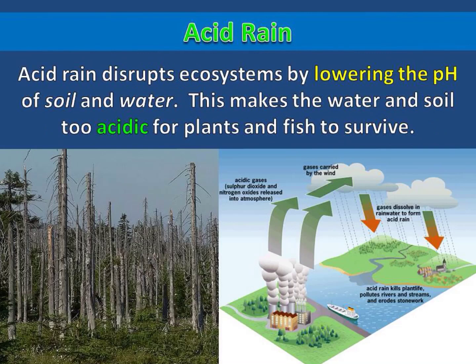Acid rain disrupts ecosystems by lowering the pH of soil and water. This makes the water and soil too acidic for plants and fish to survive.